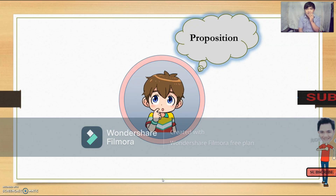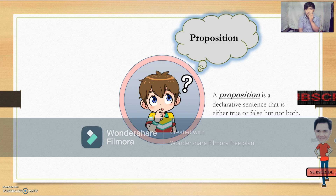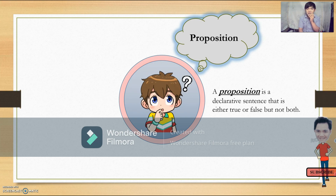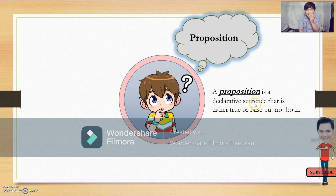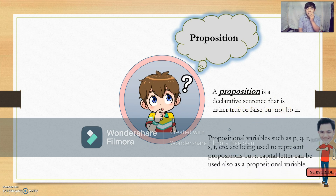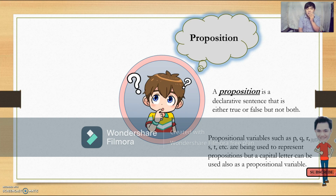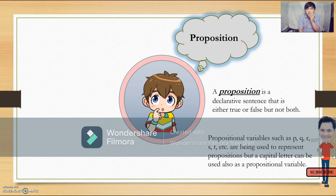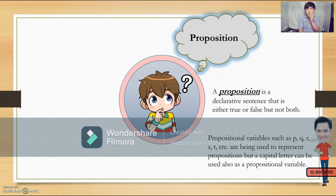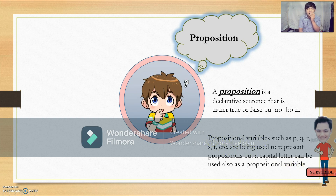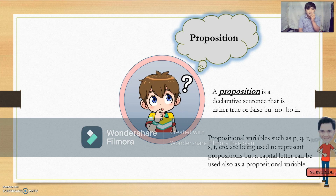Let's have the definition of a proposition first. A proposition is a declarative sentence that is either true or false, but not both. Then we have the propositional variables. Propositional variables such as P, Q, R, S, T are used to represent propositions, but any capital letter can be used also as a propositional variable.